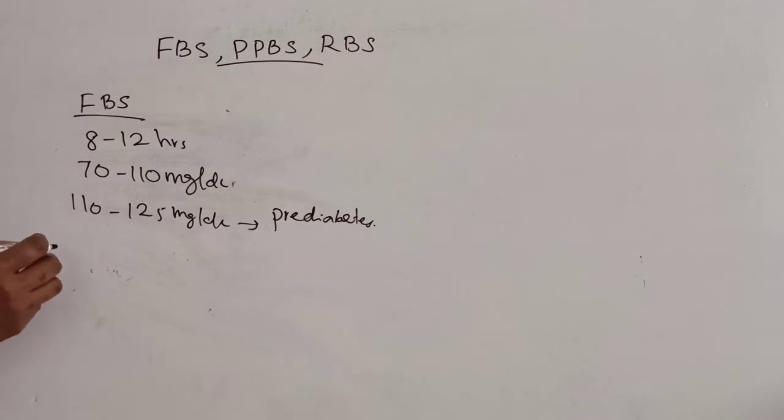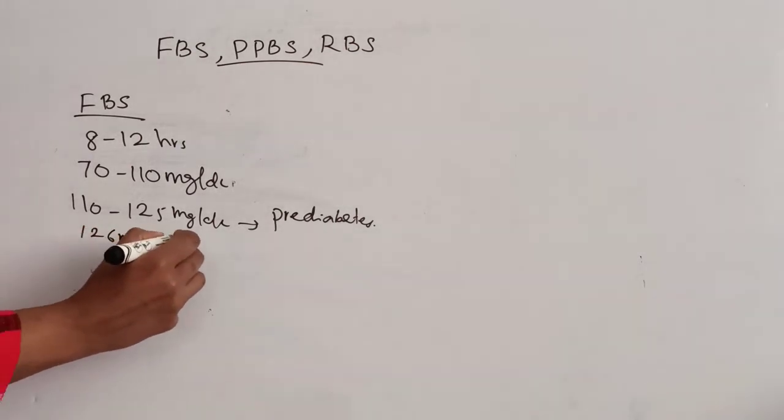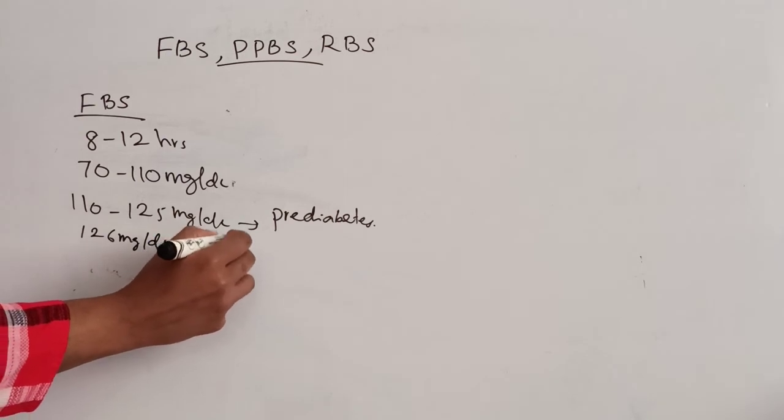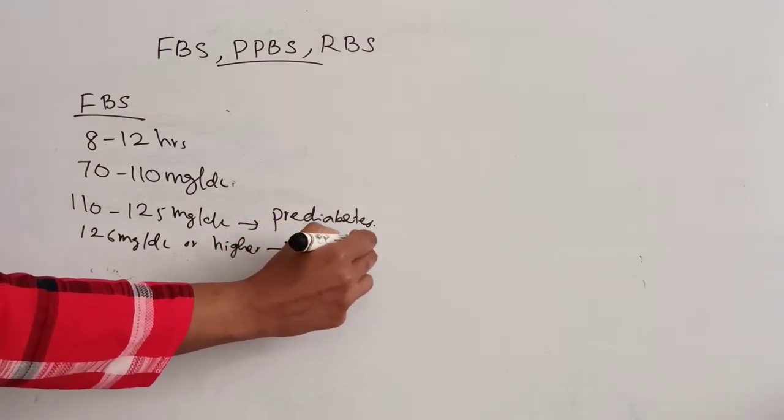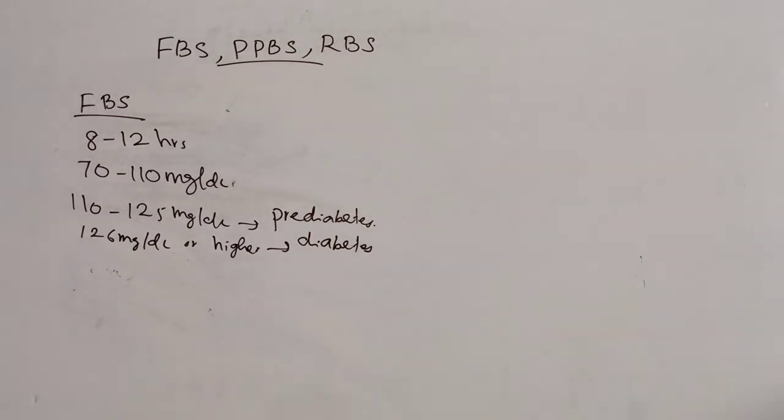Pre-diabetes means your blood sugar levels are higher than normal but not high enough to be classified as diabetes. If the value is 126 mg per dl or higher, it indicates diabetes, that means high blood sugar.